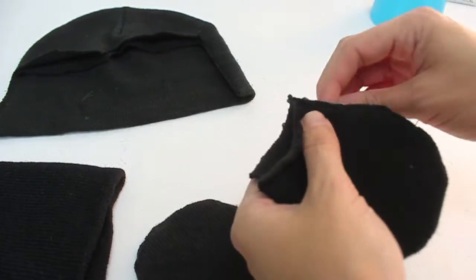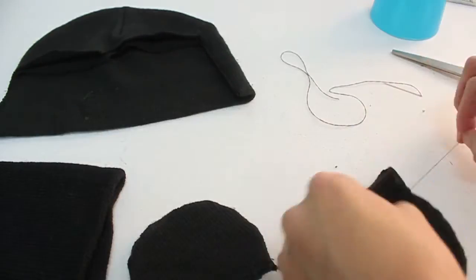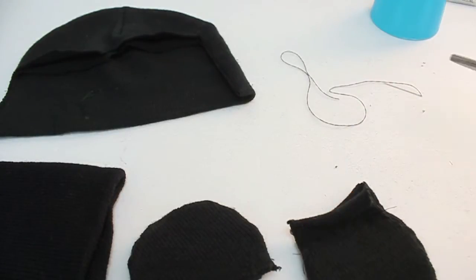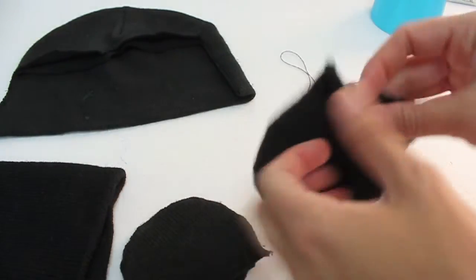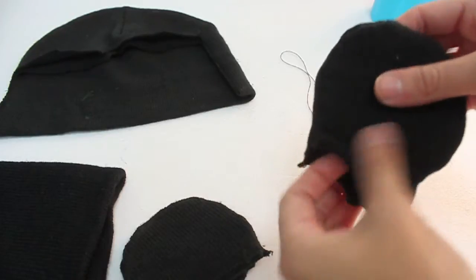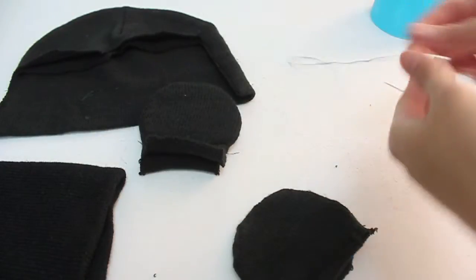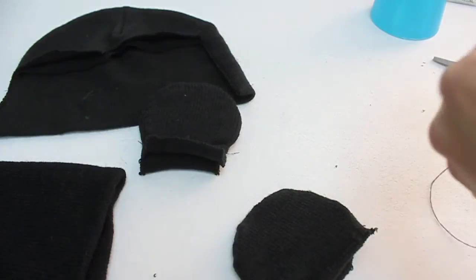You want to still leave that extra fabric at the very ends. This is going to help you bind your beanie together with the ears. As you can see, one side is done. I'm going to go ahead and sew my other side as well.